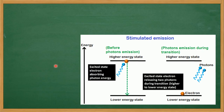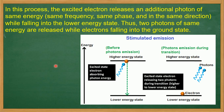In the stimulated emission process, the excited electron releases an additional photon of the same energy, same frequency, same phase, and in the same direction when falling into the lower energy state. Thus, two photons of the same energy are released when the electron falls into the ground state.